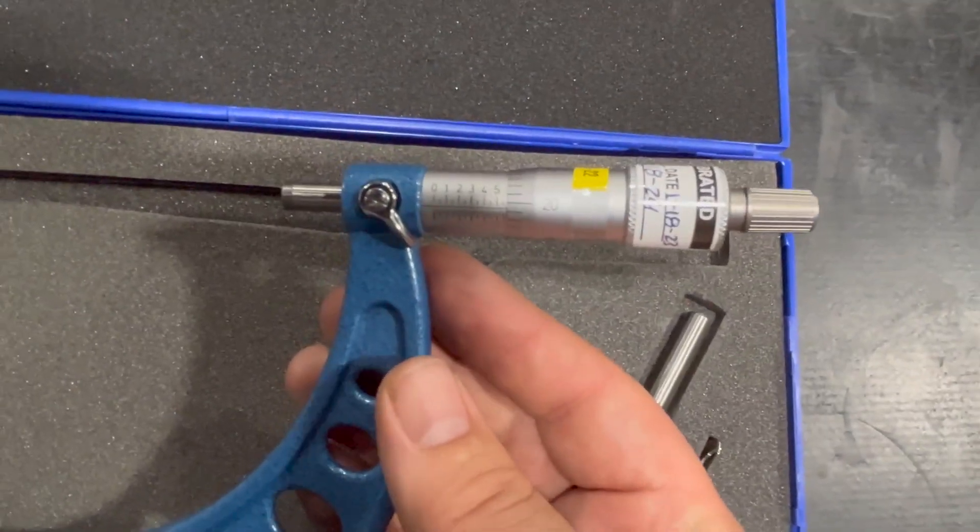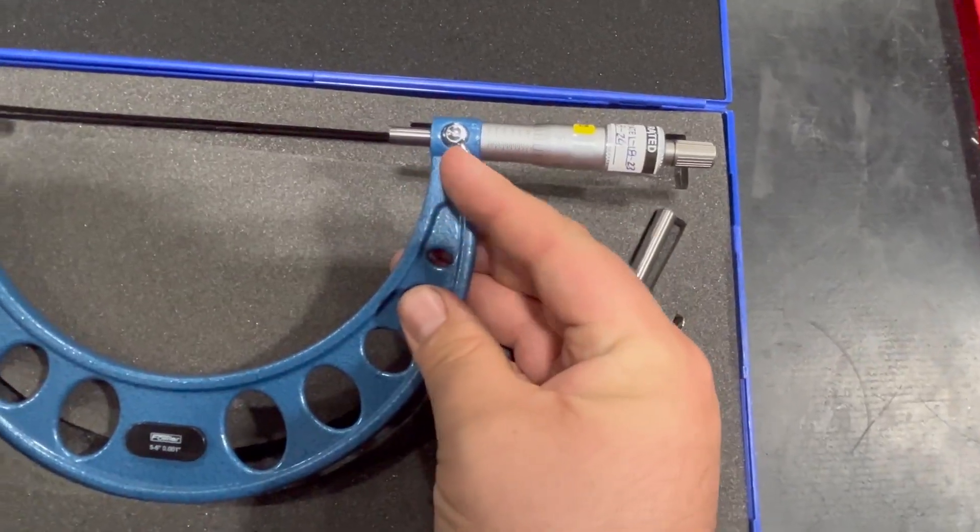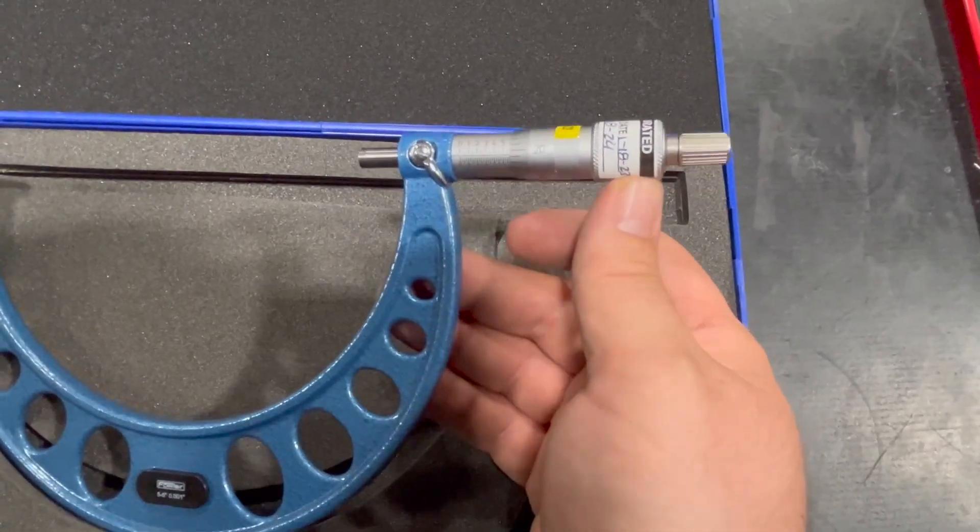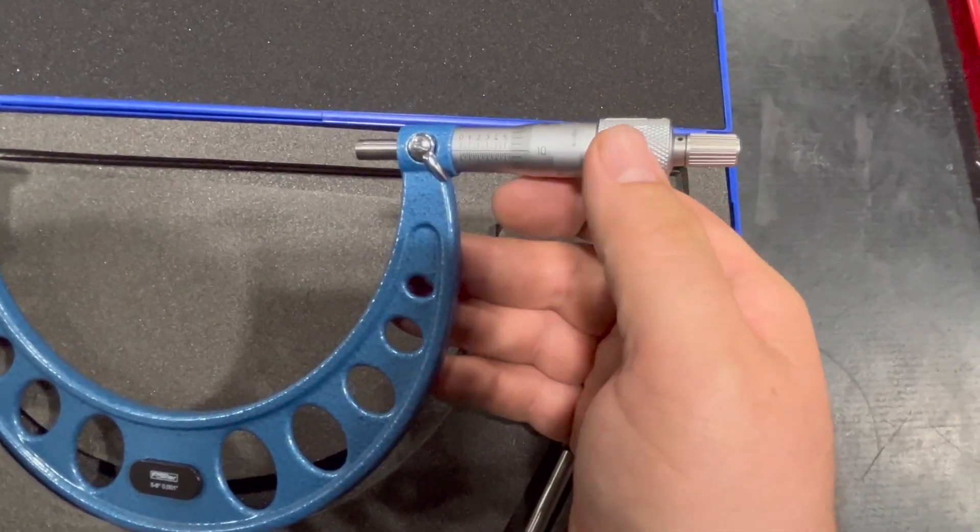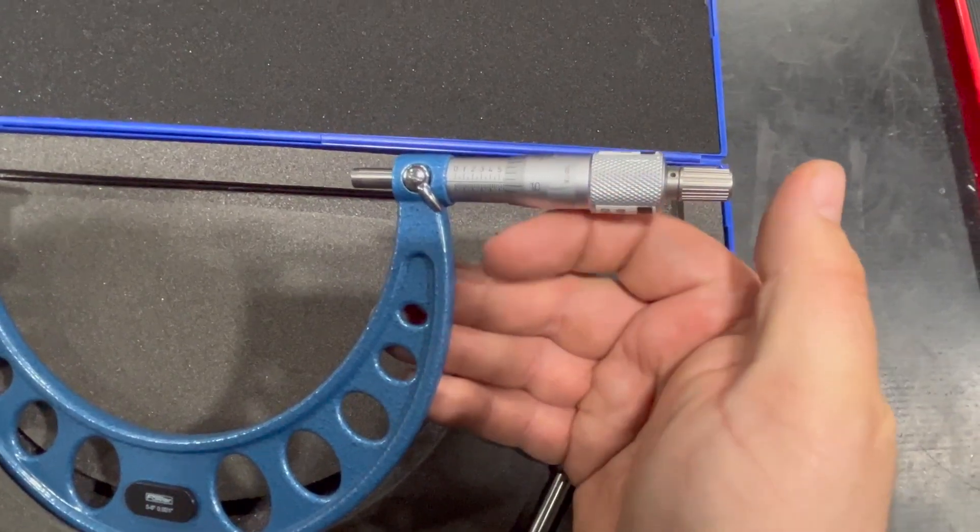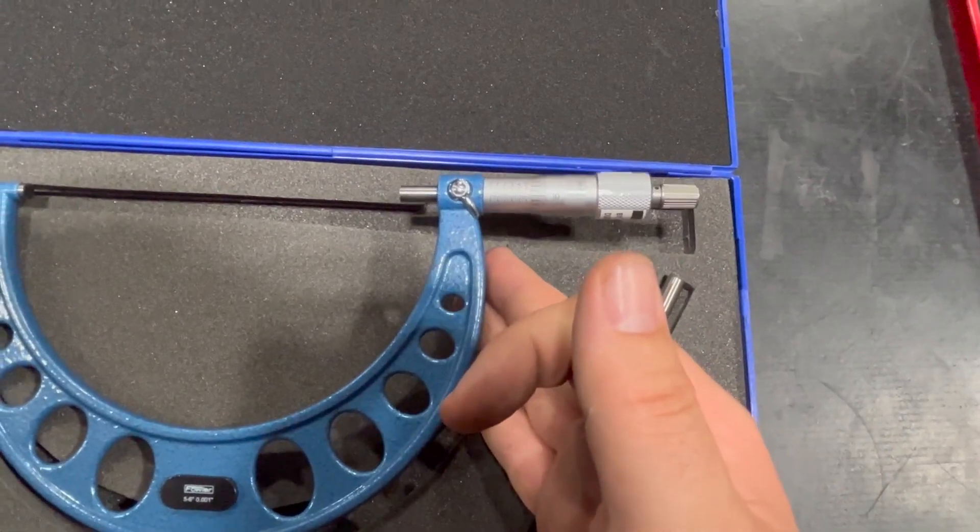You can see the measurements over here. It doesn't have the tenths. It does have a locking mechanism here that works really good, and also over here it's got a nice thimble with knurls on the thimble and then a nice ratchet to make sure that everything is evenly pressured.